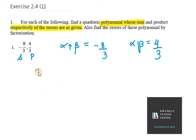The equation will be x square minus minus 8 over 3 in bracket x plus product is 4 over 3.